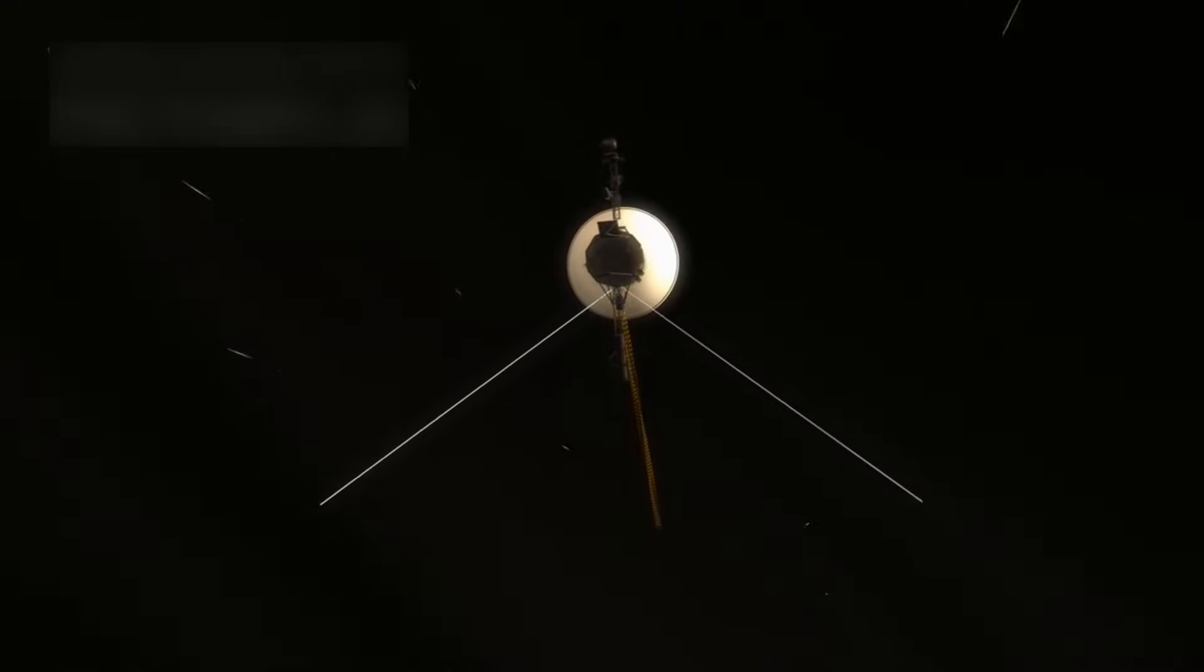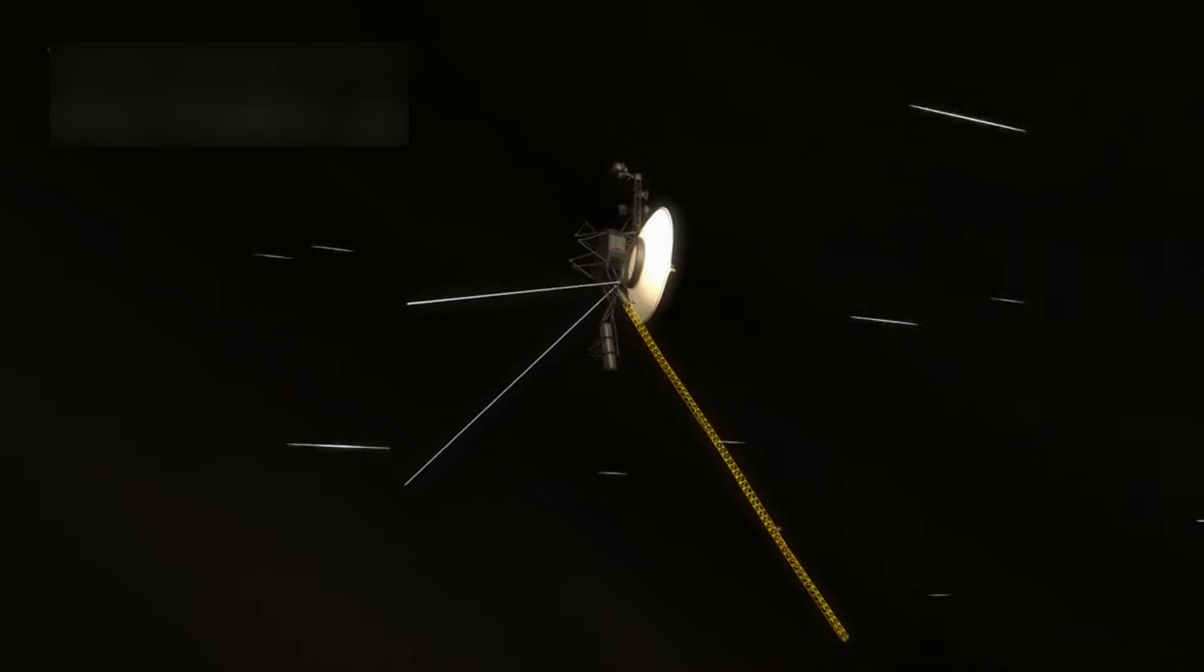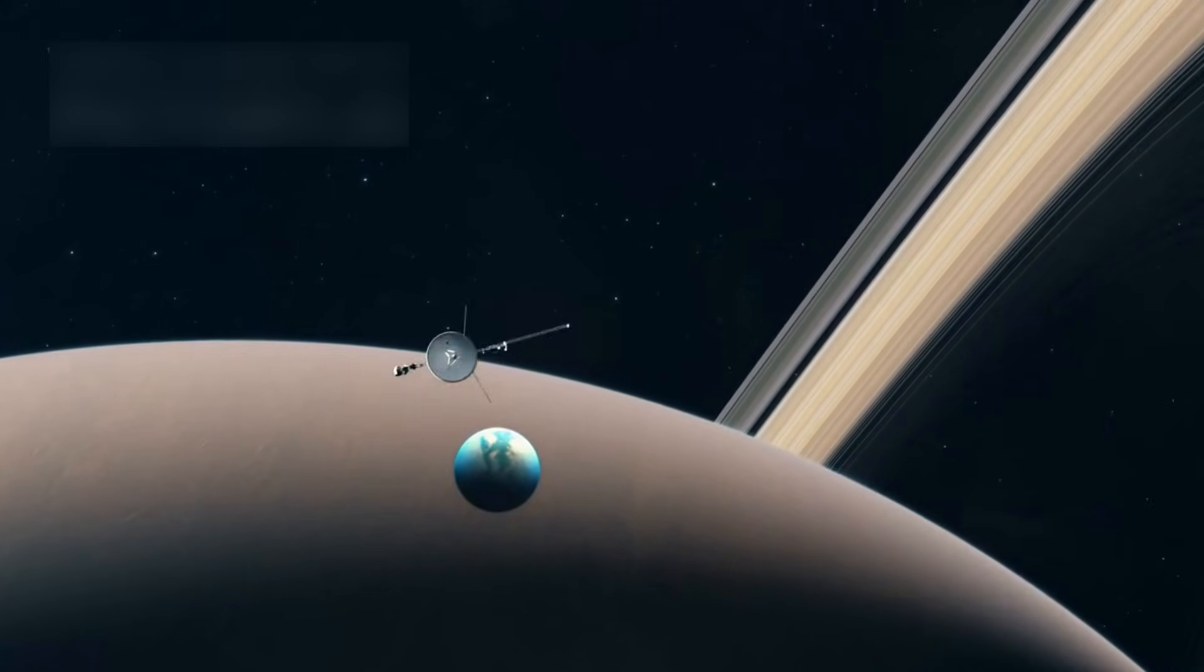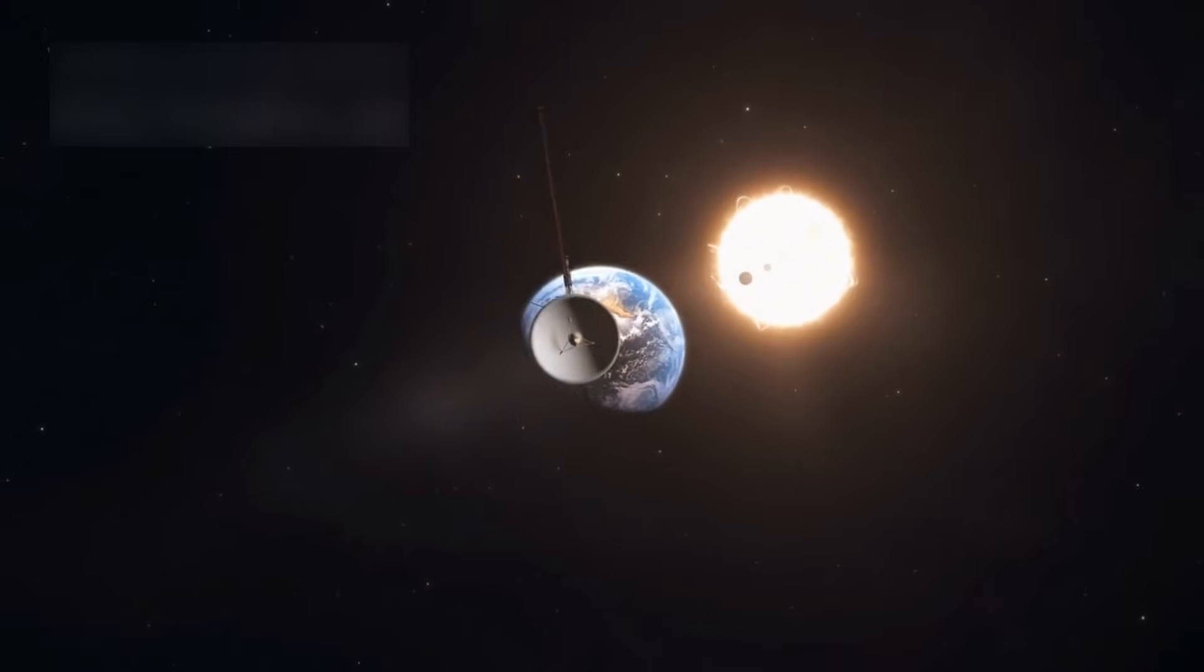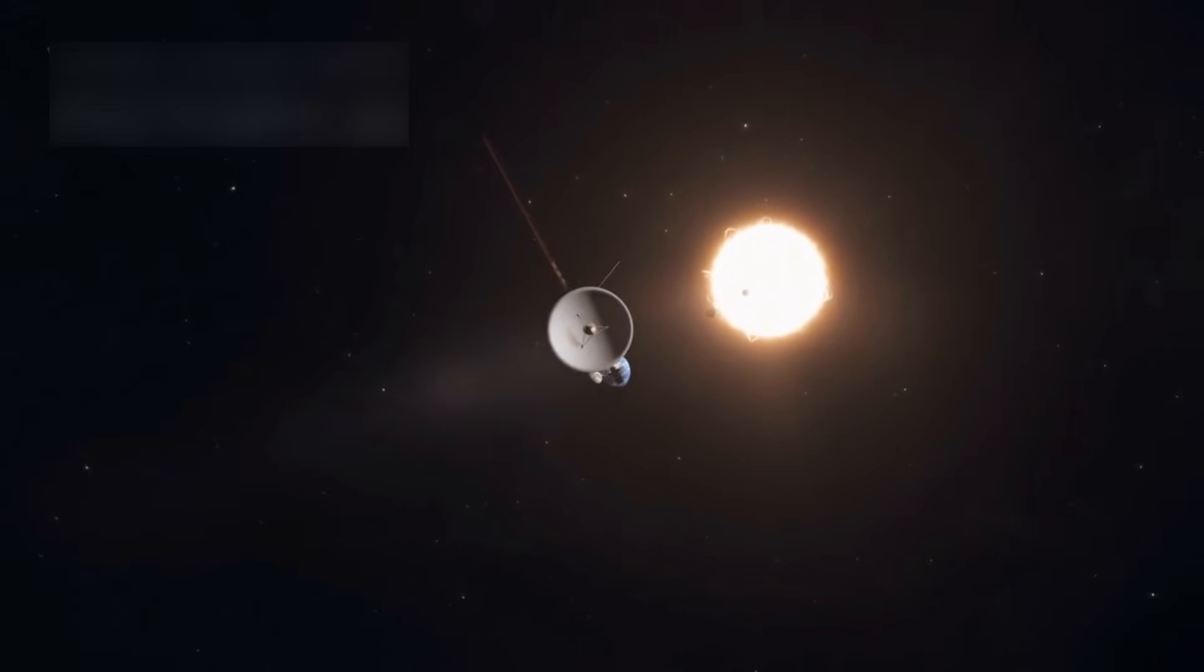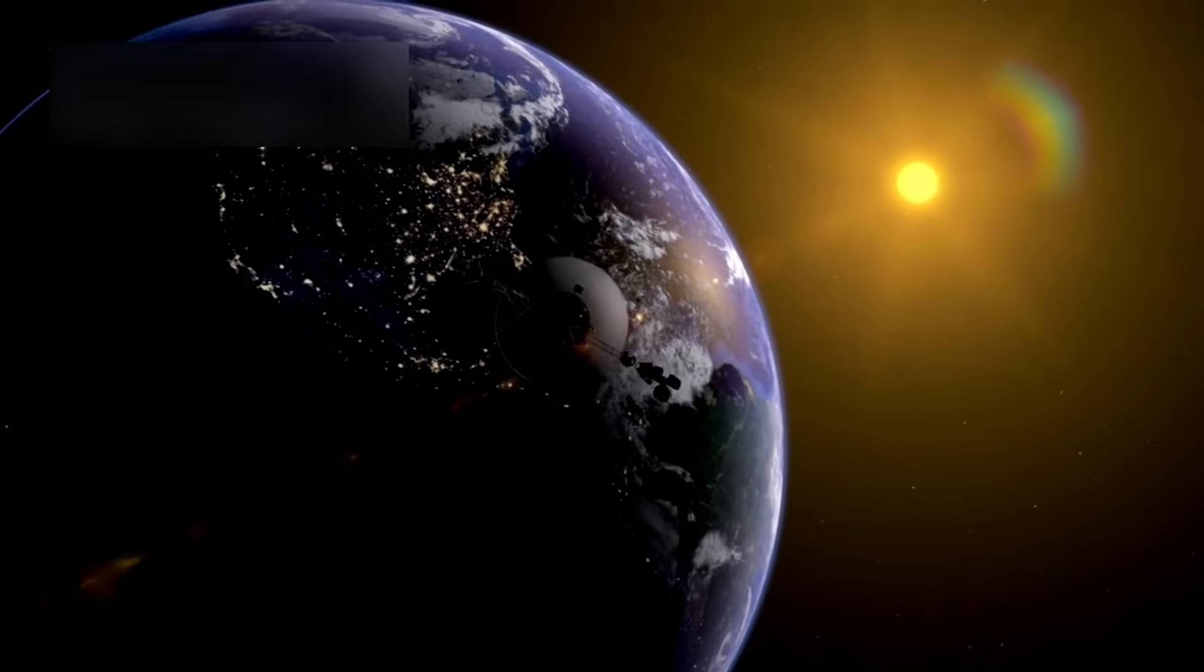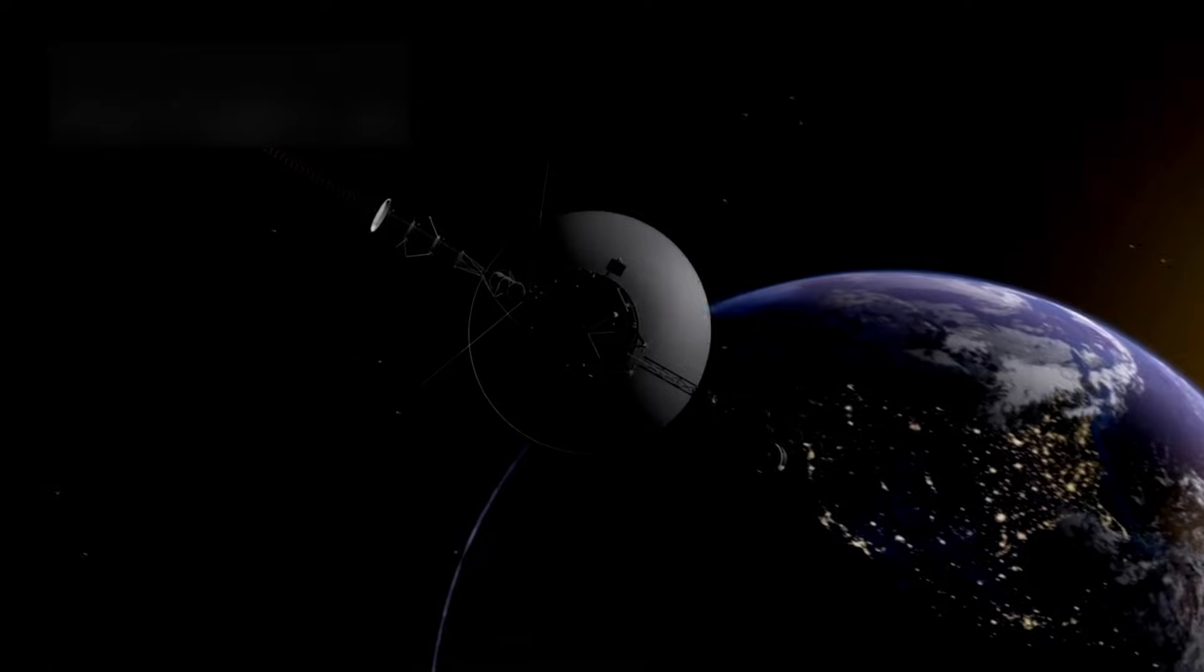As Voyager 1 kept flying, it continued to operate decades past its expected lifespan. It has now been working for over 45 years, traveling more than 14 billion miles from Earth. In 2012, it crossed a major boundary called the heliopause, where the influence of our sun fades and interstellar space begins. This was a historic moment, making Voyager 1 the first human-made object to leave the solar system.